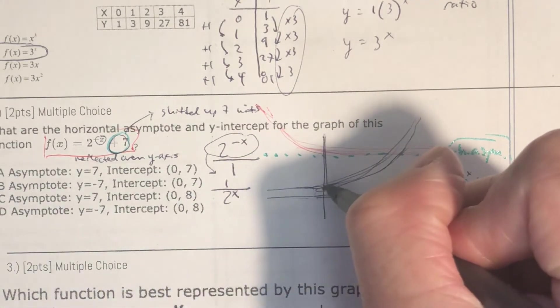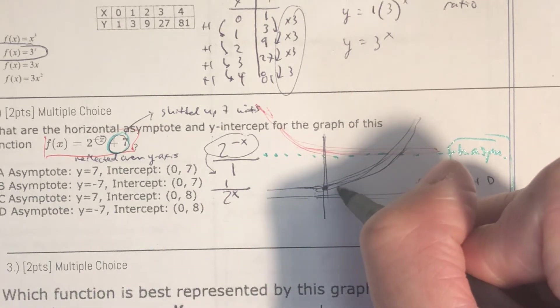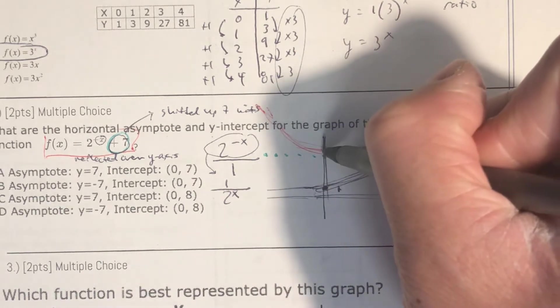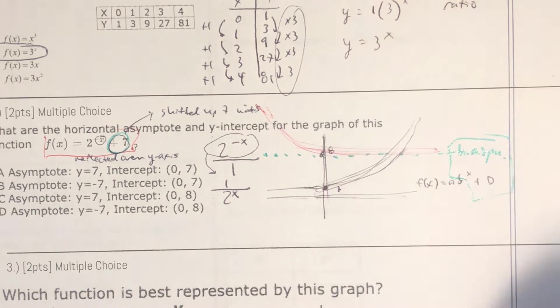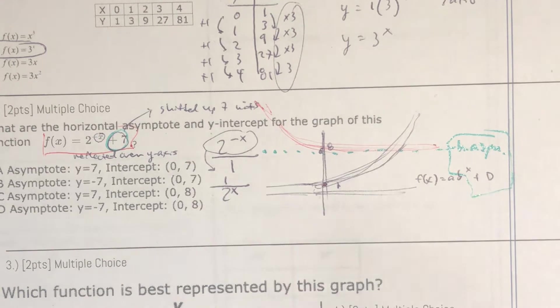Remember, the plus d value is essentially your horizontal asymptote. So that would be the plus 7. Now, the y-intercept was normally at 1. But if you add 7 to that, that'll be at 8. So your choice is going to be c.